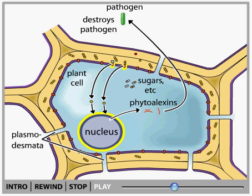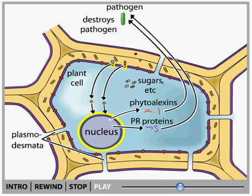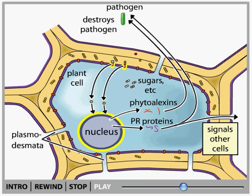Some of the genes that are expressed code for proteins called pathogenesis-related, or PR proteins. Some PR proteins kill bacteria or fungi by breaking down their cell walls. Others may travel through intercellular passageways called plasmodesmata and serve as alarm signals to neighboring uninfected cells.